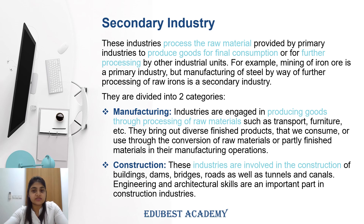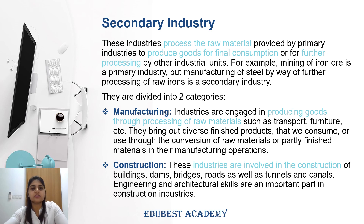Manufacturing industries produce finished goods which we can either directly consume, or they produce partly finished goods from raw materials which other manufacturing industries further process and convert into finished goods.